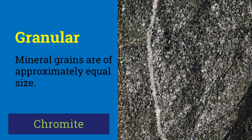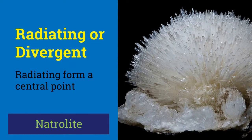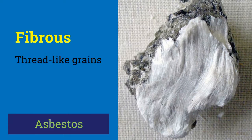If the individual grains are larger, the aggregate is described as coarse granular, and if the grains are smaller, it is referred to as fine granular, like that of chromite. When acicular crystals are radiating from a central point, the habit is said to be radiating. Natrolite has this habit. Very thin thread-like grains or fibers have fibrous habit, like asbestos.